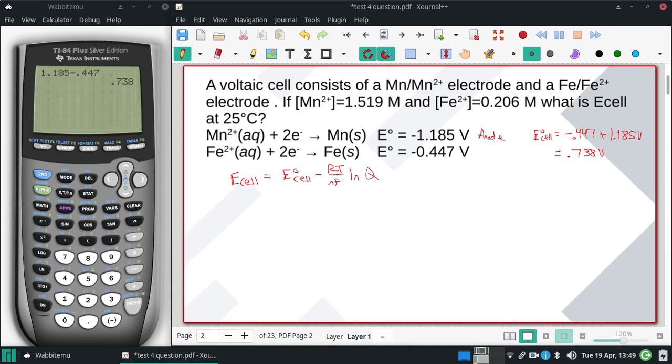That defines the anode and cathode to help us write the overall equation. We're reversing the anode reaction. The overall equation is: Mn(s) + Fe²⁺(aq) → Mn²⁺(aq) + Fe(s).